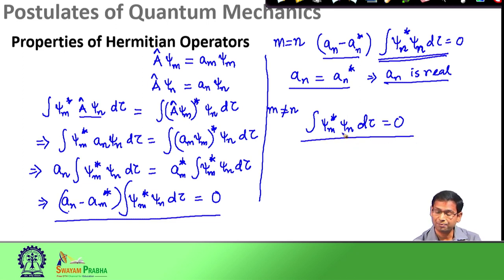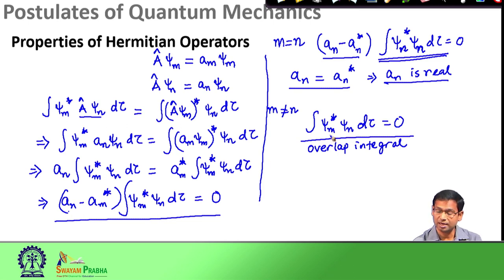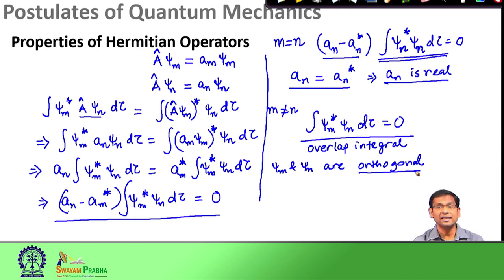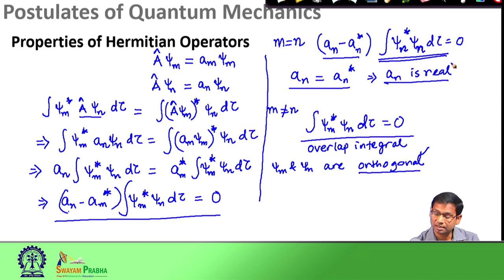This condition is called an overlap integral. When the overlap of two different functions ψ_n and ψ_m* is zero, we say ψ_m and ψ_n are orthogonal. So we see that the eigenfunctions of any Hermitian operator are orthogonal. We already saw that the eigenvalues of a Hermitian operator are real, and now we see that eigenfunctions of a Hermitian operator are orthogonal.